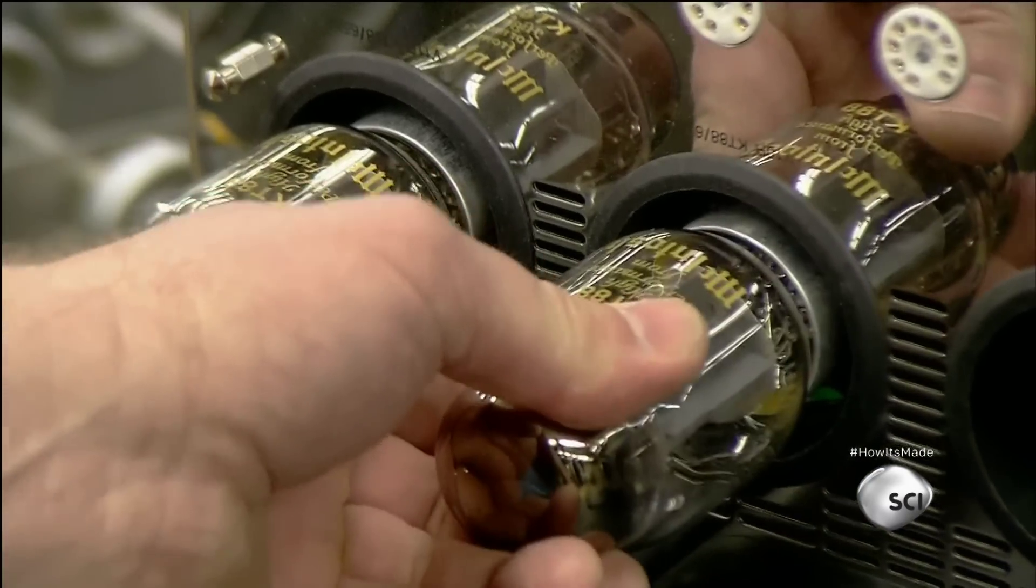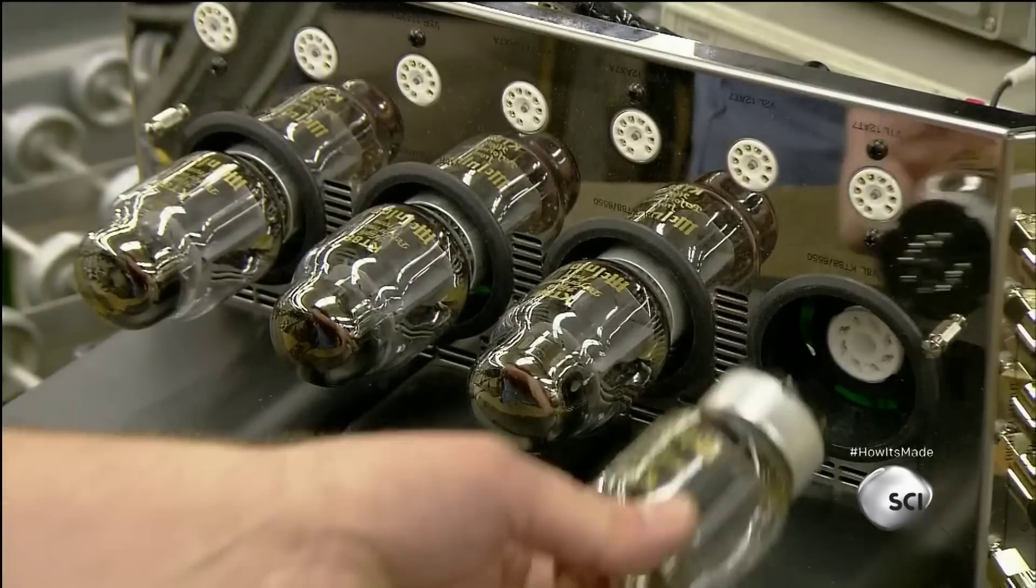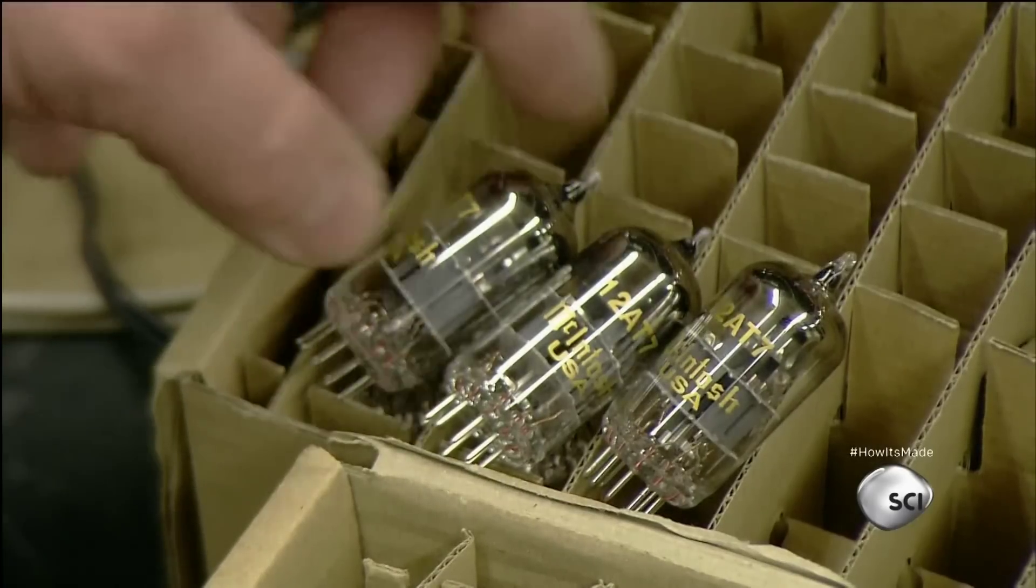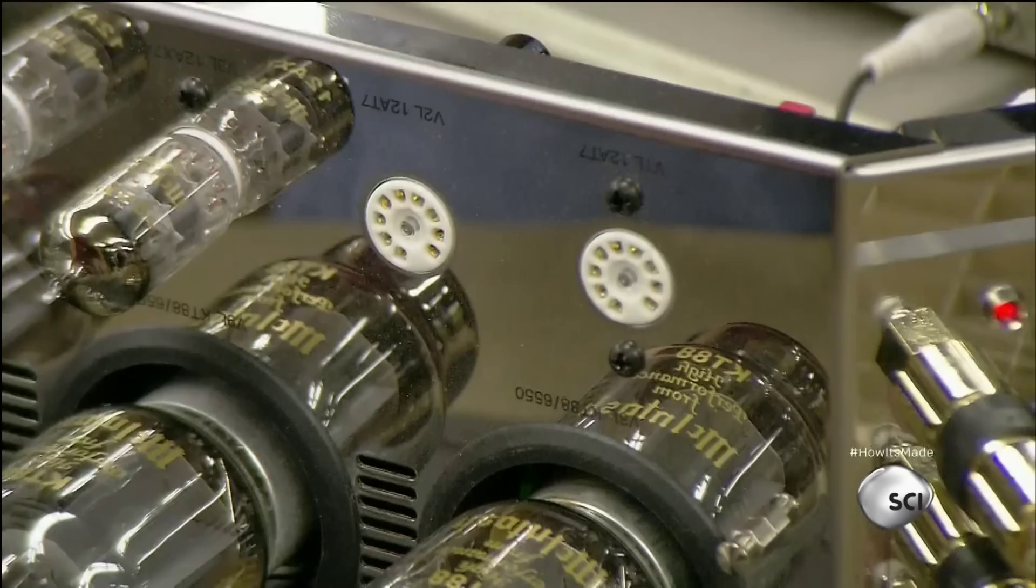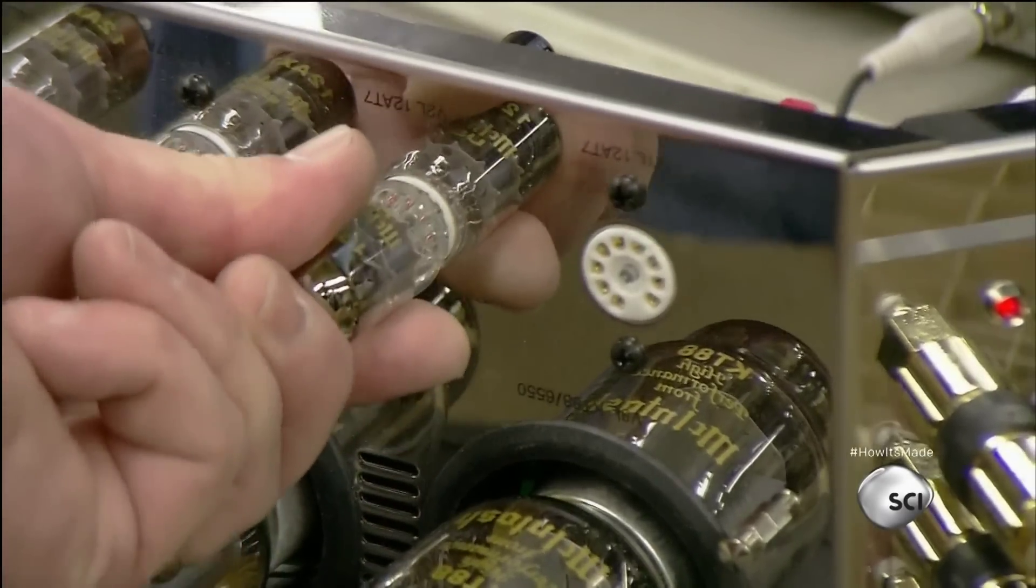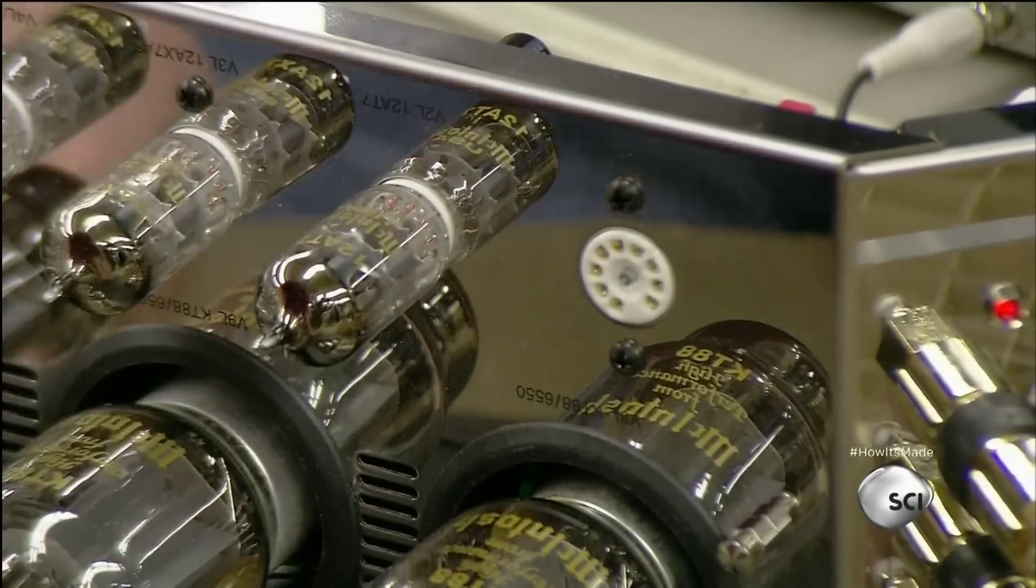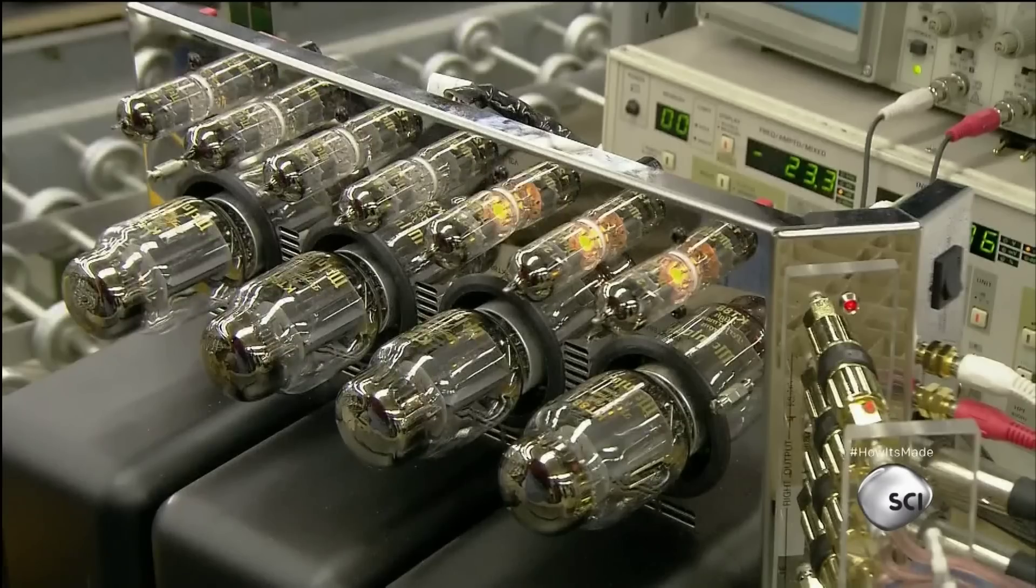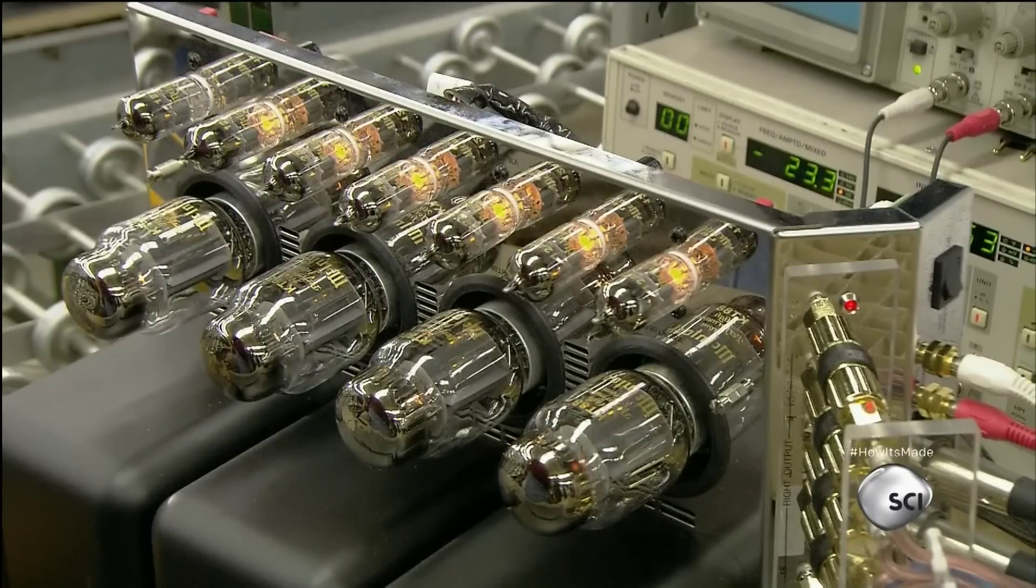The tubes are made of glass with a heat-resistant base. The interior contains a combination of metals, but no air, hence the term vacuum tube. The amp has 11 tubes in all, seven small ones to power input signals from a source, such as a CD player, and four big ones to power output to the speakers.